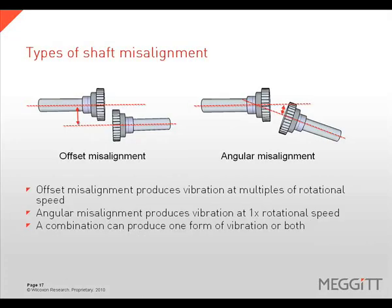There are two types of misalignment: offset or parallel misalignment and angular misalignment. Offset misalignment will commonly produce a vibration response at multiples of rotational speed — 2x, 3x, 4x, and 6x are all common.